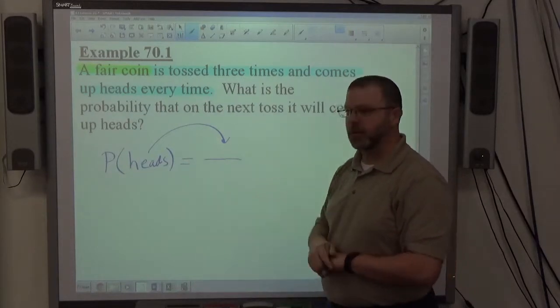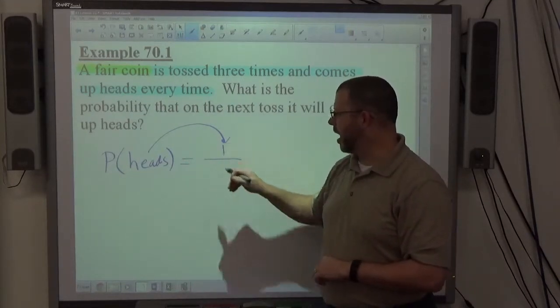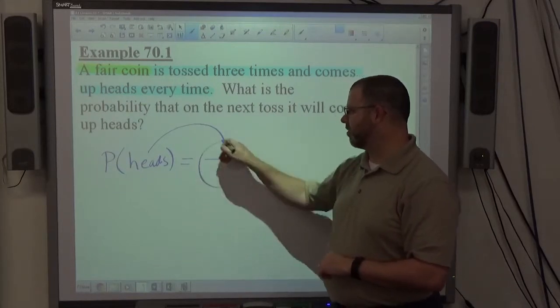All right, so how many ways are there to get what we want? One. How many outcomes are there? Two. So the probability of getting heads is a half.